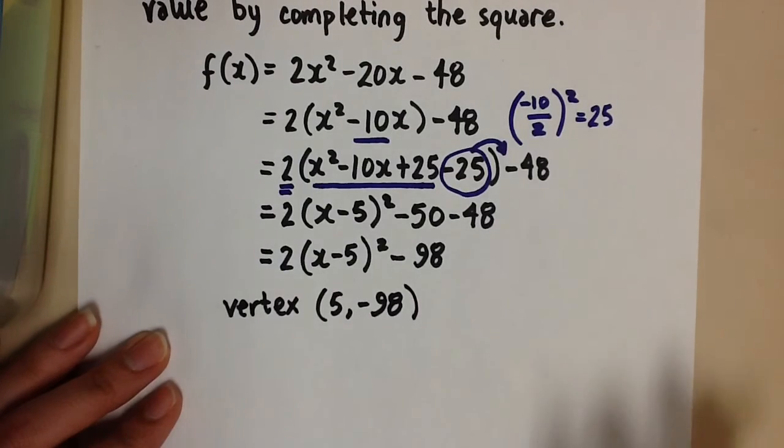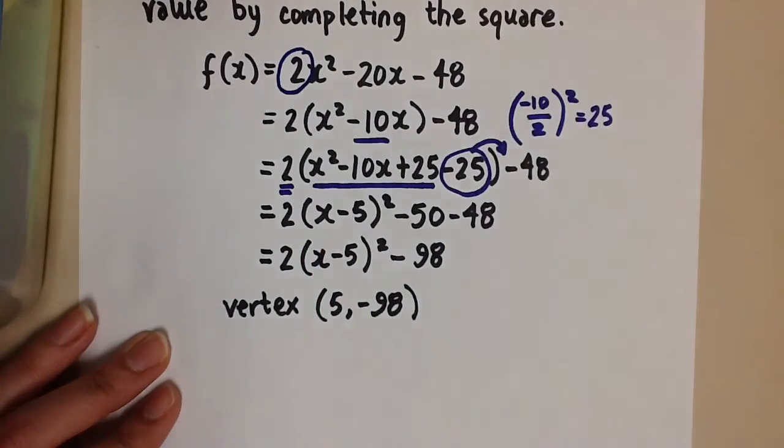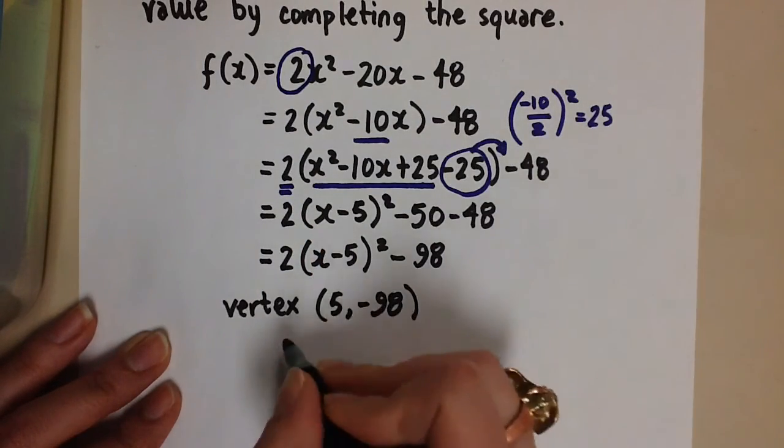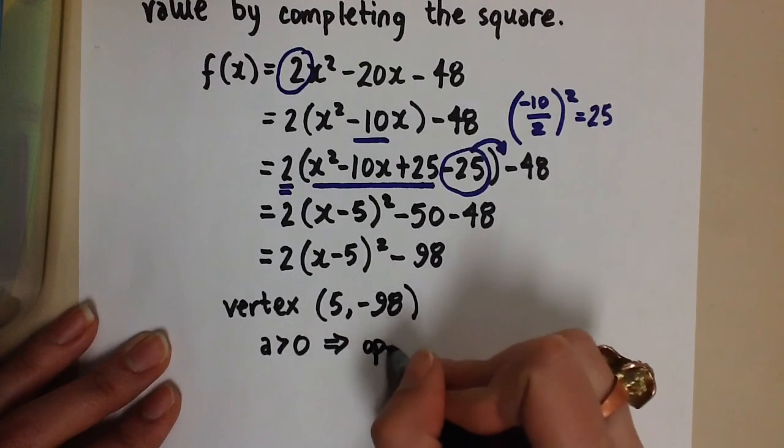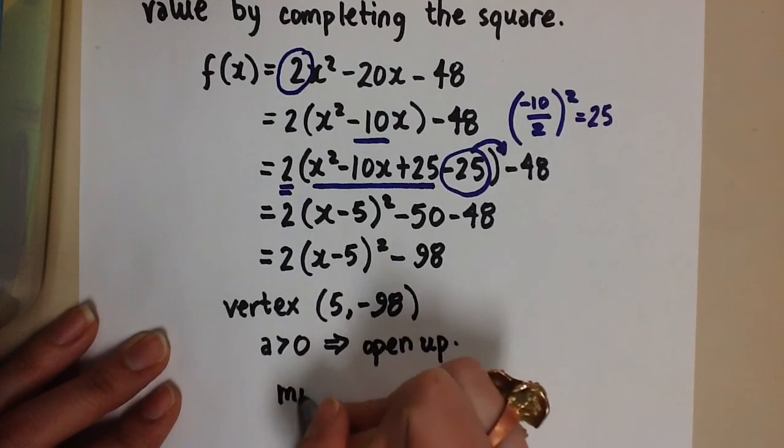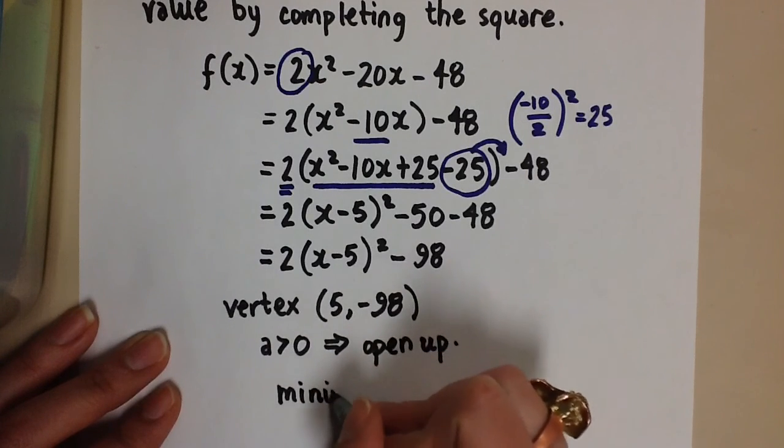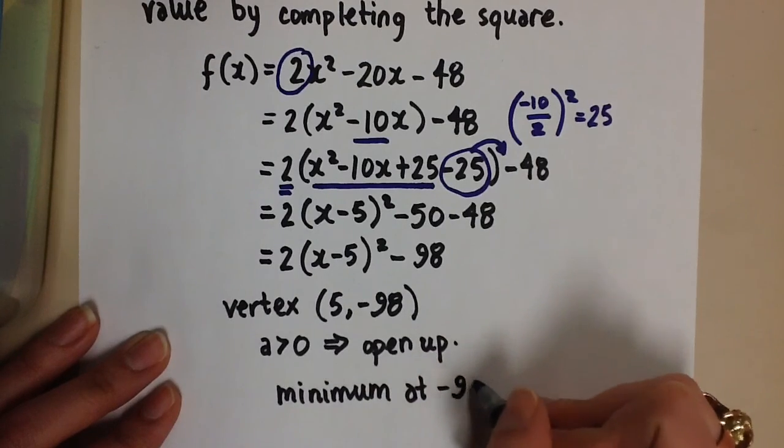And since the a value of the original quadratic equation is positive, we know that this parabola is opening up, which means we have a minimum value at negative 98.